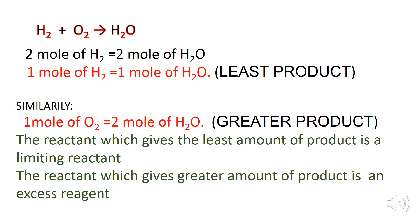The reactant which gives the greater amount of product is the excess reagent. Here, one mole of oxygen gives two moles of water. Two moles of water is a greater amount of product compared to the one mole of water produced by one mole of hydrogen. So oxygen is the excess reagent because it gives the greater amount of product.